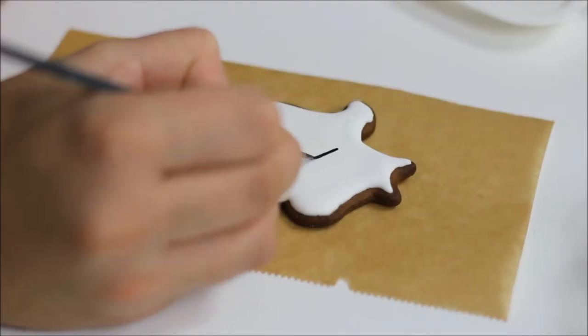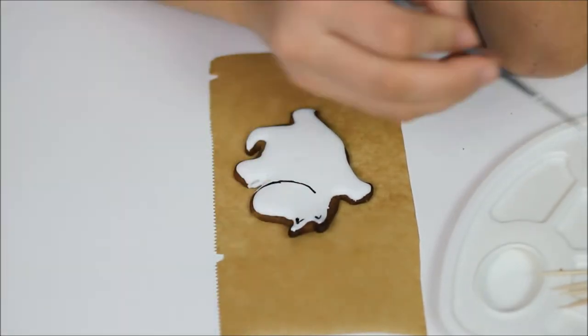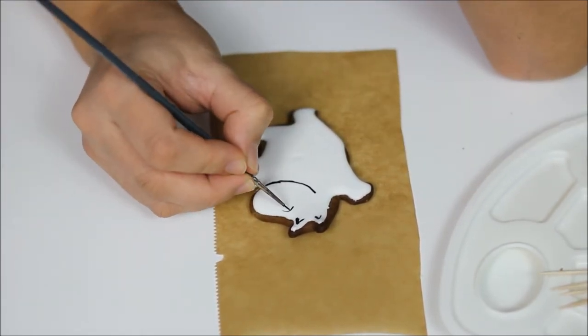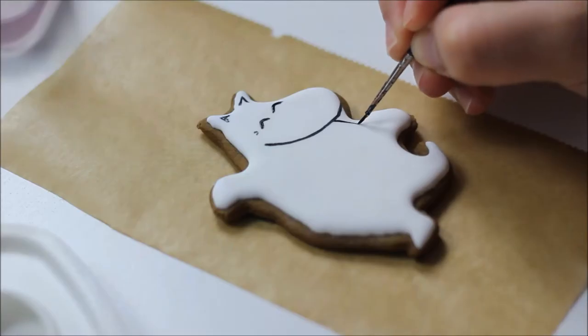Once the cookie has dried, again with black cake decorating powder and some water, start outlining the head, the ears, the eyes and the belly.